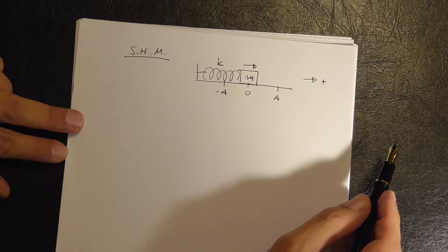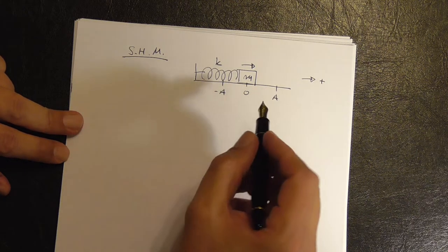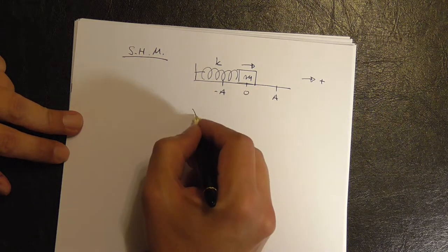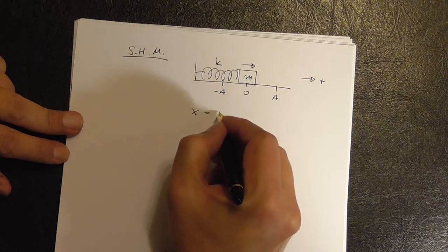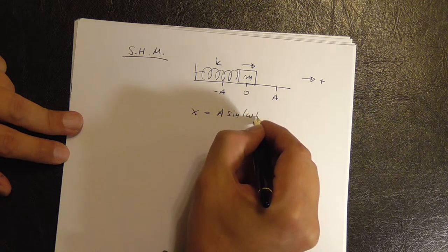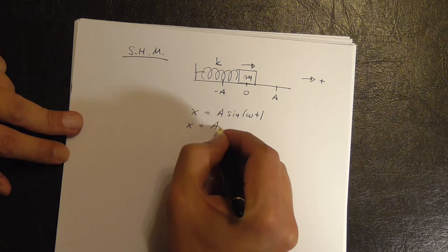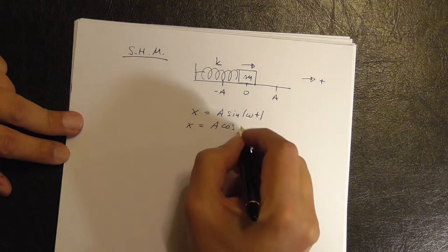So the IB says that the solution of this, of X where X is the position is a sine or a cosine depending on initial conditions, or X is equal to A cosine of omega T.